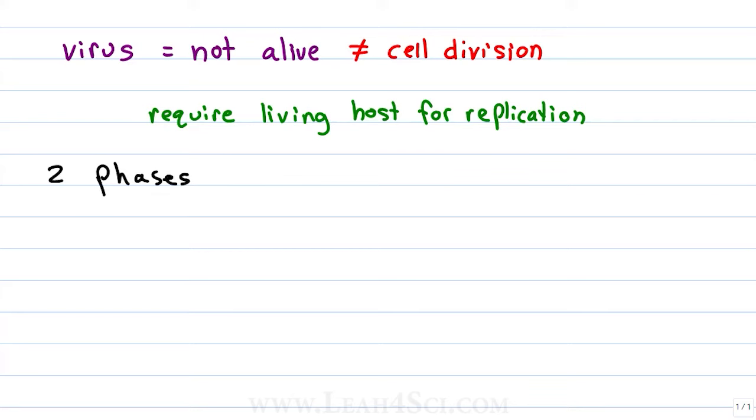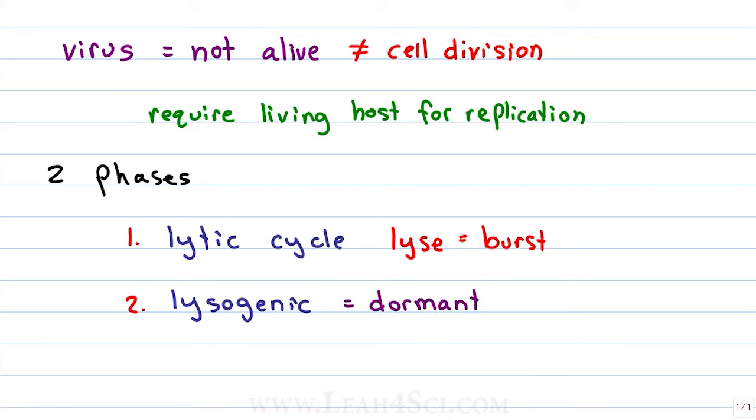Viruses have two phases or replication cycles. The first is the lytic cycle which comes from the word lytic or lice which means to break or burst. This is the destructive and deadly cycle. Then we have the lysogenic phase which is the dormant phase. In this case, we still have the word lice but instead of lysing the cell, we're lysing the genes.